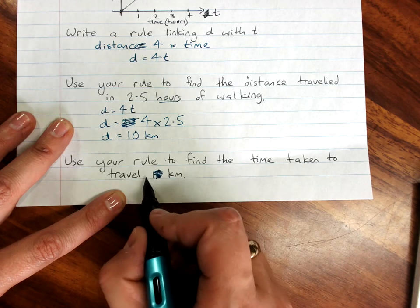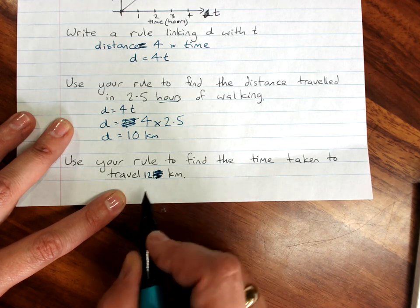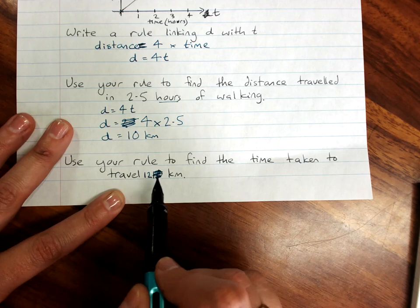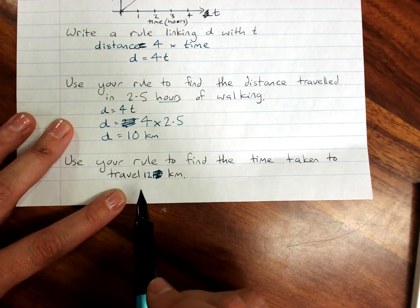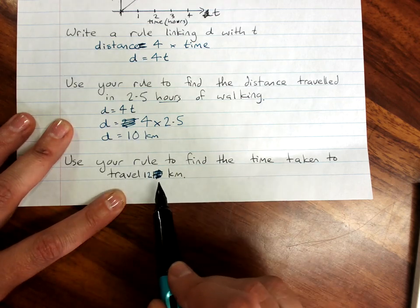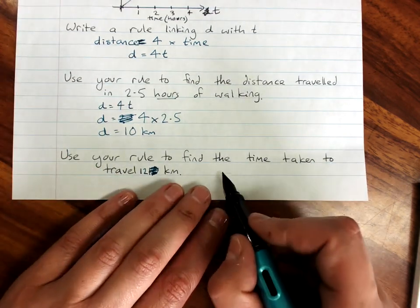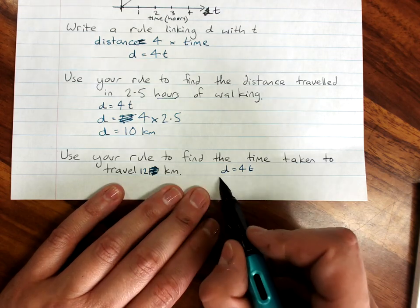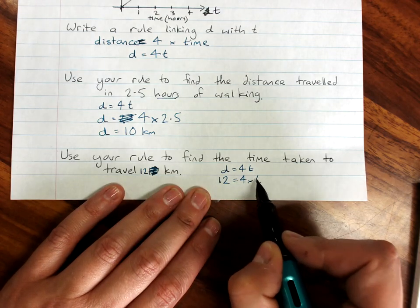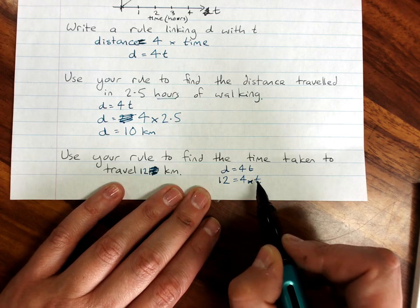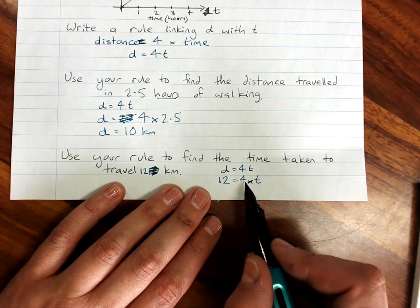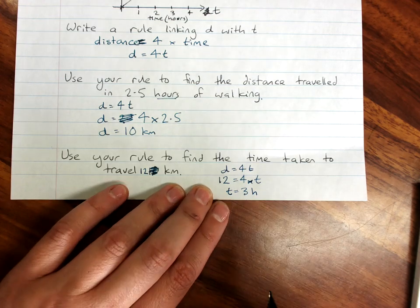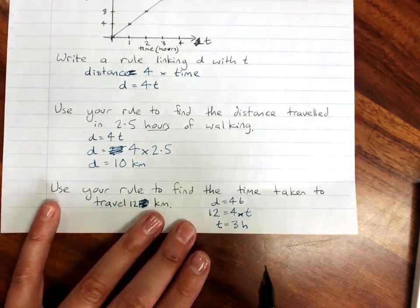So I'm just going to change this question here to 12 kilometers because obviously I wrote one that wasn't going to be very helpful. Use your rule to find the time taken to travel 12 kilometers. So we write our rule and instead I want to find time. I know distance. 12 equals 4 times time. It's often easier if we put our times back in. Solve the one-step equation to discover divide by 4 on both sides. Time equals 3 hours. So you can use your rule to solve problems.